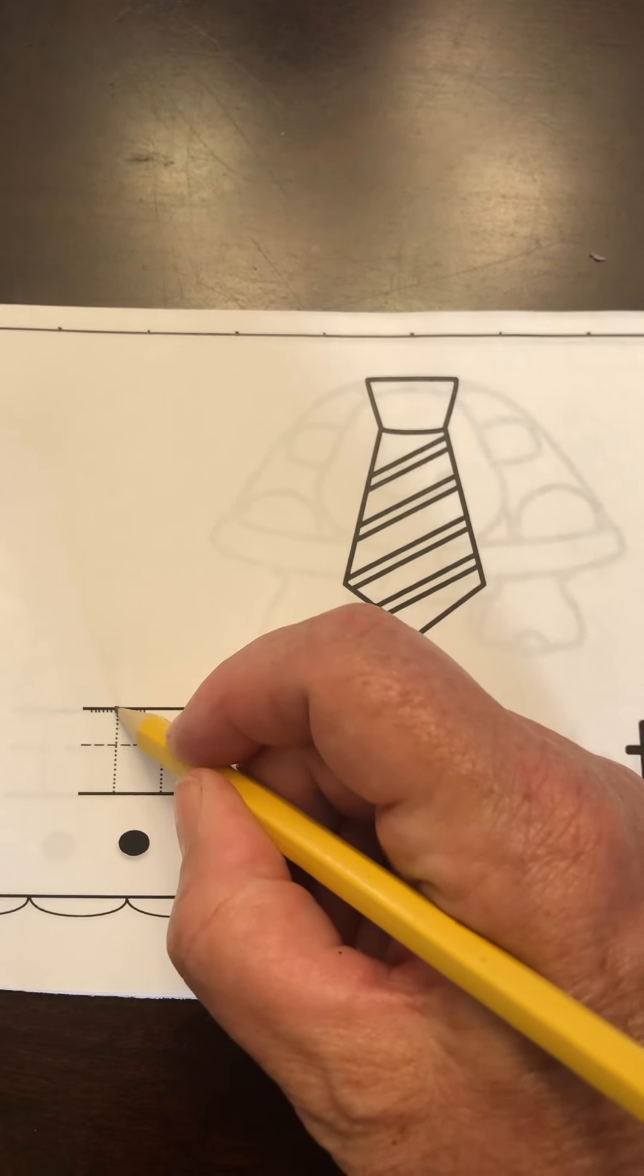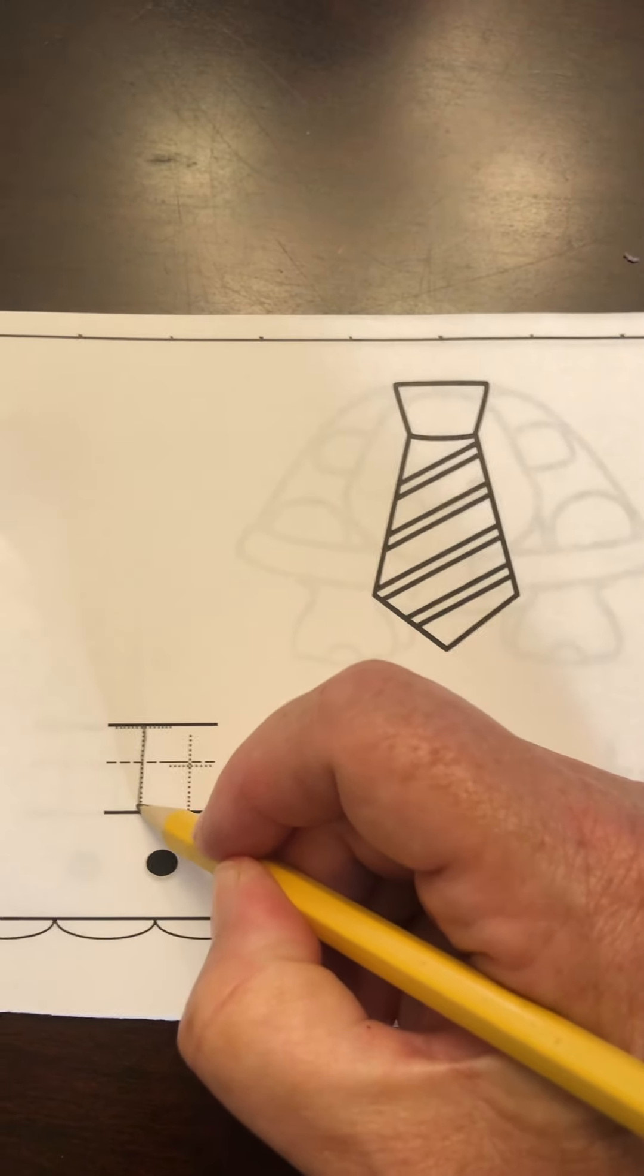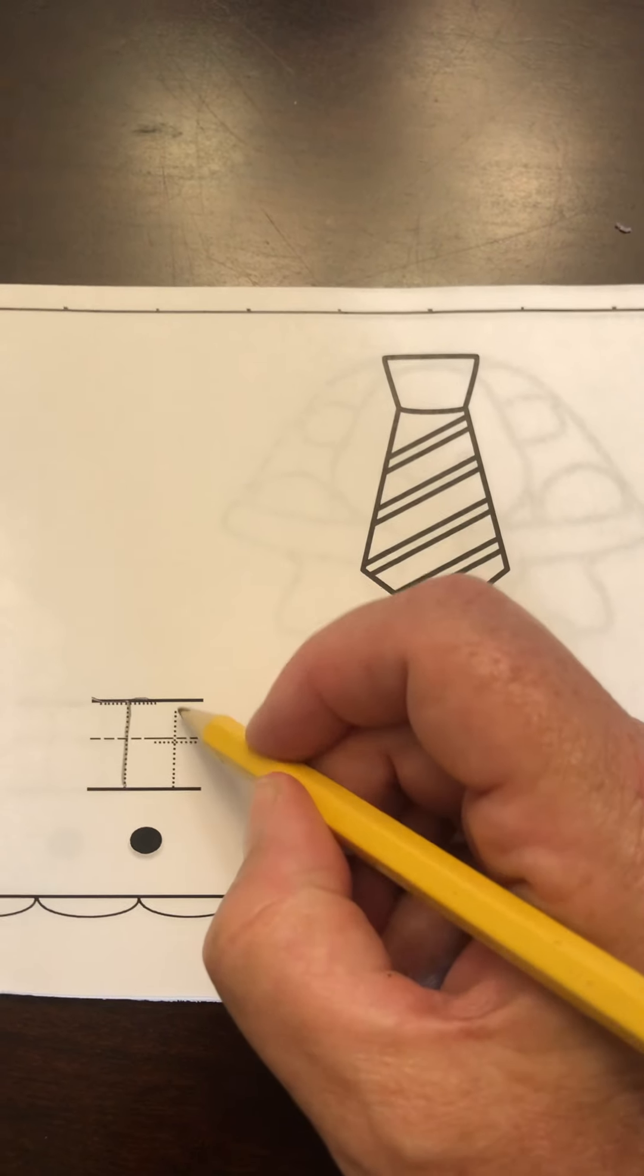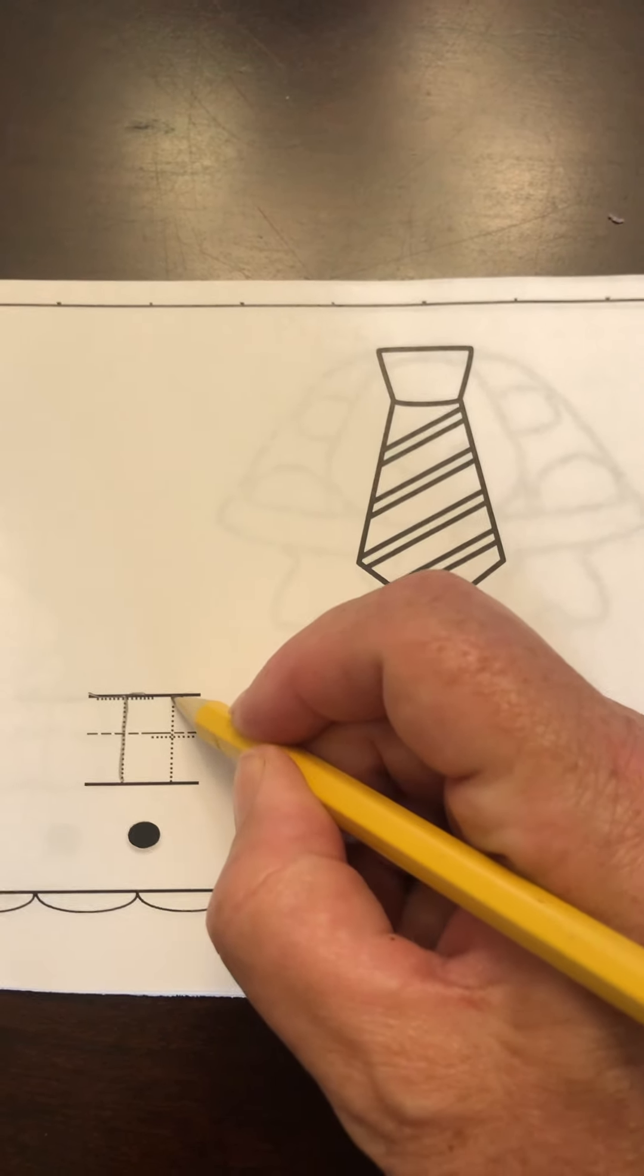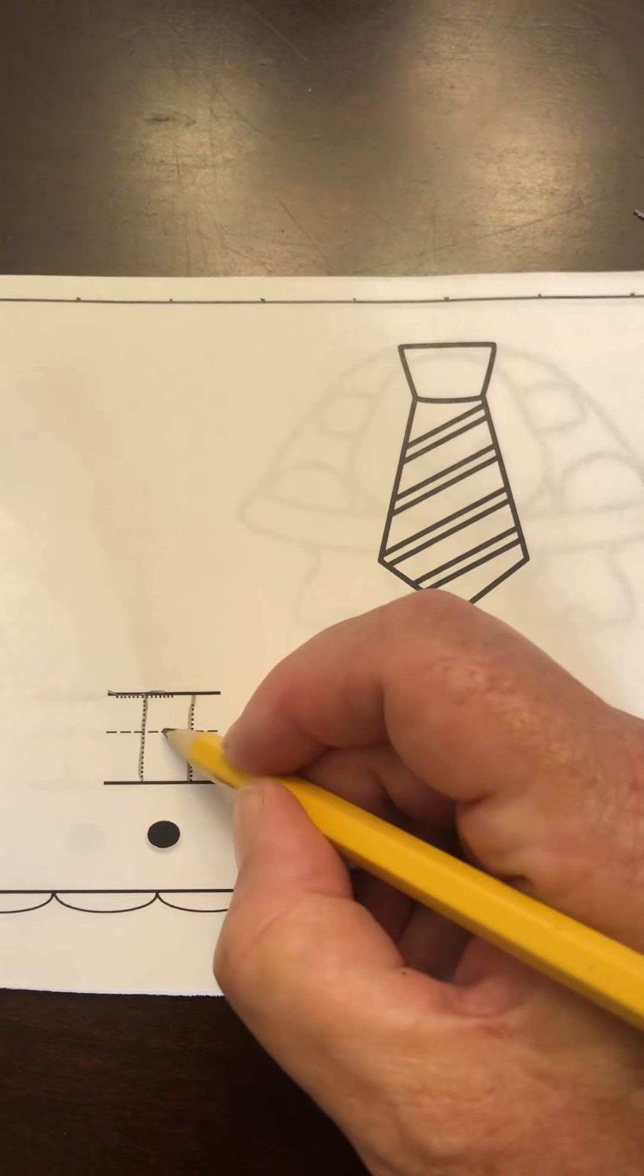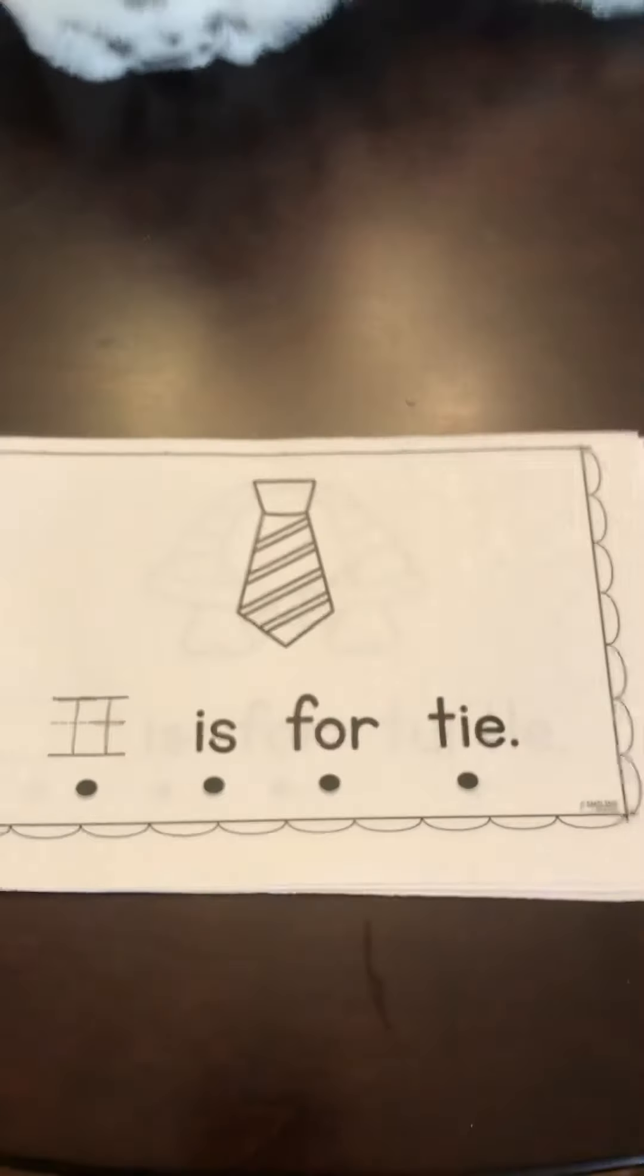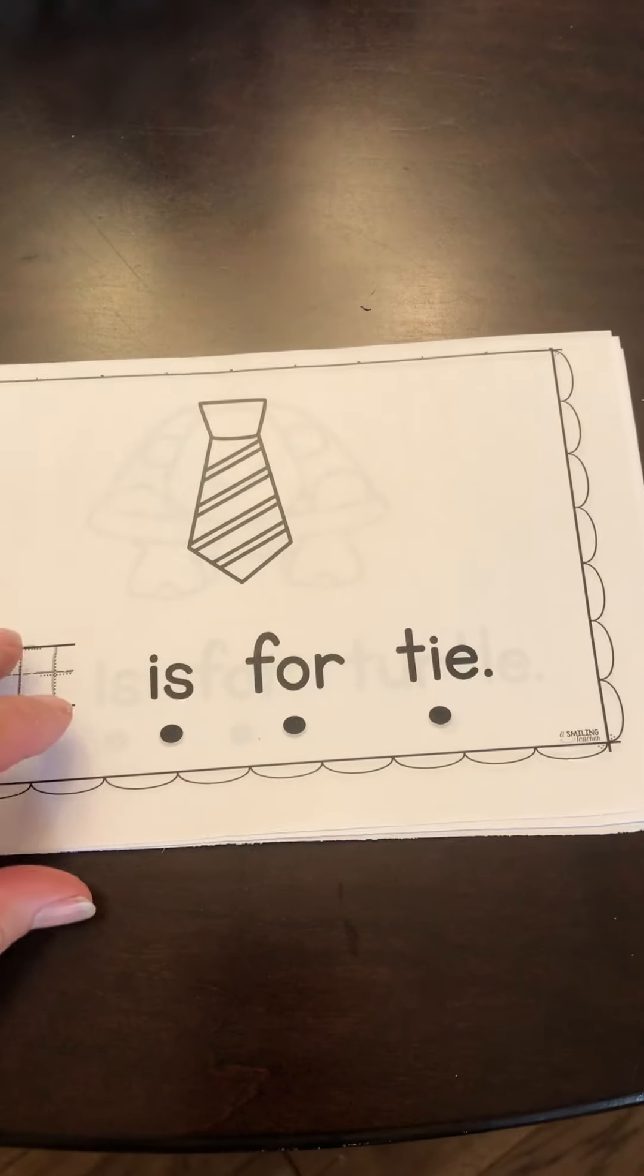Start on the skyline, go down to the grass line, cross on the skyline. Now we're going to do lowercase. Start on the skyline, go down to the grass line, cross on the plain line. T, tie.